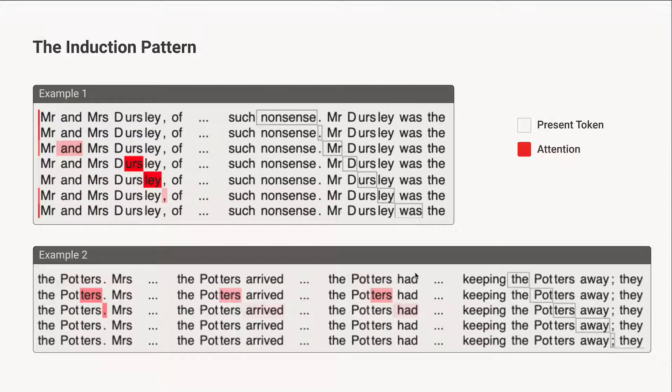Something that we see a lot of is what we call the induction pattern. For instance, if we look here and focus on this D token, which is the present token, if we look back it attends really strongly to ERS, which is the next token after D. And when we look at when the present token is ERS, it attends to LE. This is a very general thing. This is all from the first paragraph of Harry Potter, by the way. But you can also observe this on lots of other text, and it works very reliably.